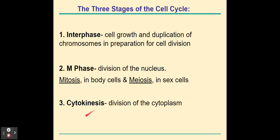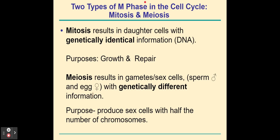Whichever it is, the last stage is called cytokinesis — division of the cytoplasm. The two types of M-phase are mitosis and meiosis. Mitosis results in daughter cells with genetically identical information, and its purposes are growth from a fertilized egg, cell specialization, and repair or wound healing. Meiosis is for just eggs and sperm, and at the end of meiosis, the eggs and sperm will be genetically different from each other. The purpose of meiosis is to produce haploid sex cells with half the number of chromosomes.